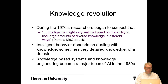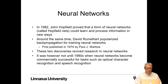As Pamela McCorduck put it: 'Intelligent behavior depends on dealing with knowledge, sometimes very detailed knowledge of a domain.' Knowledge-based systems and knowledge engineering became a major focus of AI in the 1980s. There was also a revived interest in neural networks: in 1982, John Hopfield proved that Hopfield nets could learn and process information in new ways, and around the same time David Rumelhart popularized backpropagation for training neural networks, which we still use today.